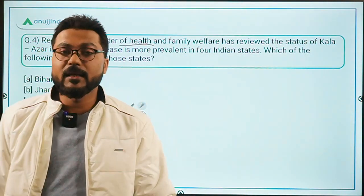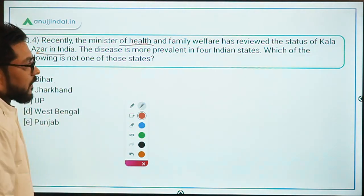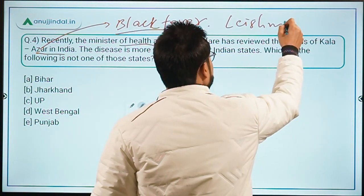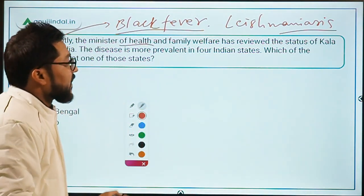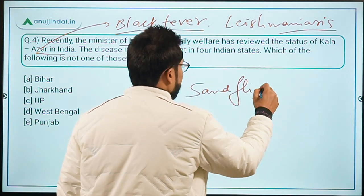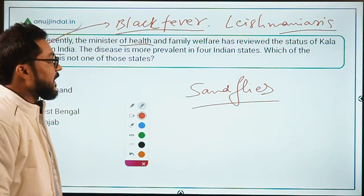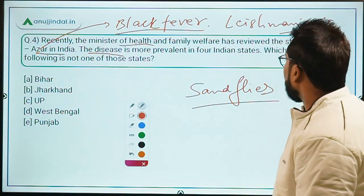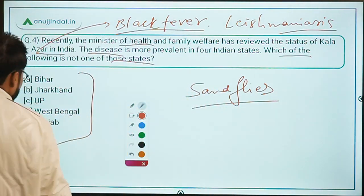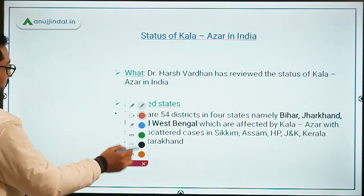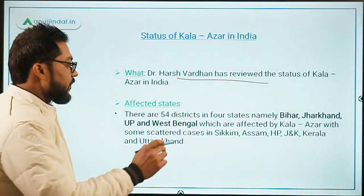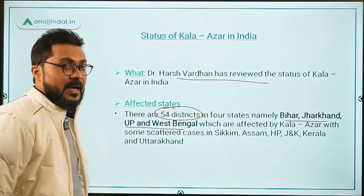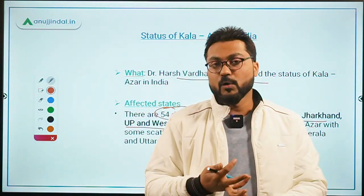Question 4: The Minister of Health and Family Welfare, Dr. Harsh Vardhan, has reviewed the status of Kala Azar in India. Kala Azar is also known as Black Fever. It is caused by a protozoa known as Leishmaniasis of the genus Leishmania, and is transmitted by sand flies. There are 54 districts across 4 states where this disease is most prevalent: Bihar, Jharkhand, Uttar Pradesh, and West Bengal. Other states like Assam, Himachal Pradesh, Jammu and Kashmir, Kerala, and Uttarakhand have only scattered cases.